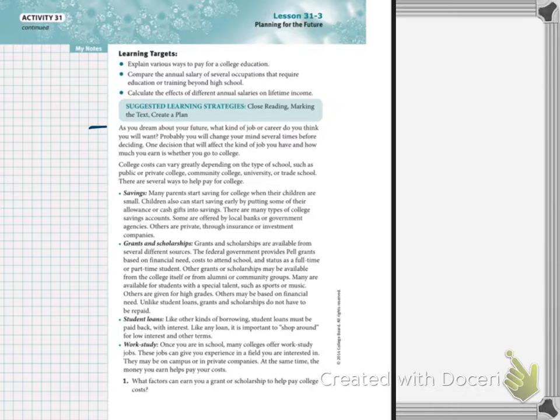Lots of people, some people don't go to college. They work as a trade or some kind of service. Other people do go to college. In some certain careers you do have to have a college degree, but not all. College costs can vary greatly depending on the type of school. If you're going to a public or private college, community college, university or trade school, there are several ways to help pay for college.